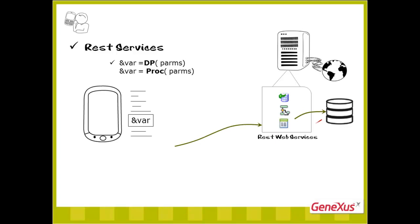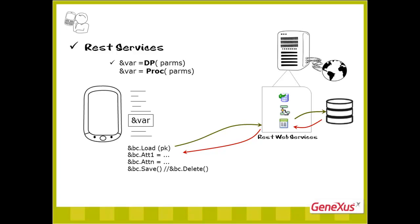In an event, we may also want to enter a new record in the database without having to request the user for information. This may be done as in any other GeneXus object, with the business component's methods and properties, except that since we are invoking from the device, it'll also have to be shown as a REST service. This is the case of batch updates. In sum, we may invoke REST services, data providers, procedures, and business components.